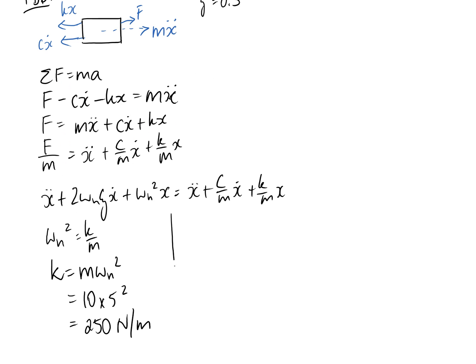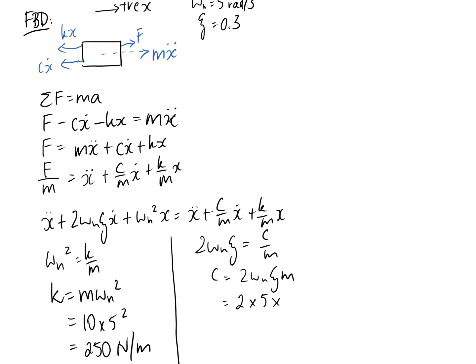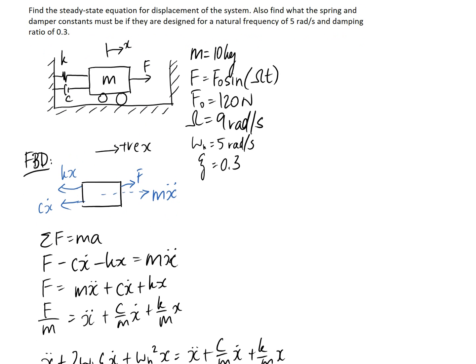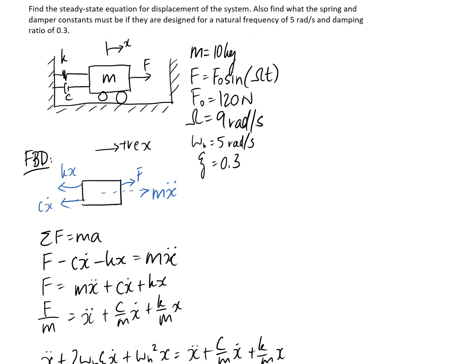Now we just need to work out the damper constant. We know that 2 times omega-n times zeta is equal to C over M. Rearranging for C: it's going to be 2 times the natural frequency of 5, times the damping ratio of 0.3, times the mass of 10. So C equals 30 newtons per metre. Now we can move on to finding the steady state equation for displacement of the system.